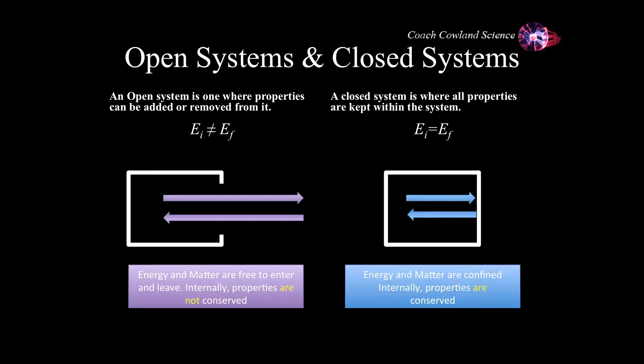An open system is one where properties can be added and removed from it. Because of this, things that happen within the system don't necessarily add up to whatever happens before or afterwards. Energy initial is not the same as energy final because energy may be leaving or entering the system. If energy and matter are free to come and go, then there's no way to tell what the outcomes are after whatever incident happened, because you don't know how much has escaped.